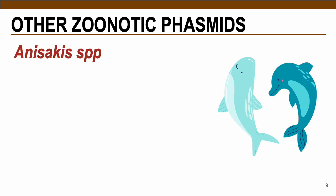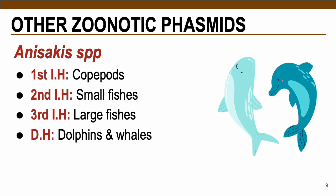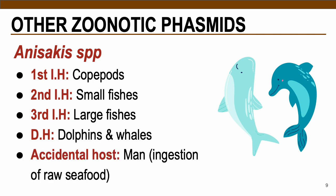In terms of the life cycle, Anisakis species requires multiple intermediate hosts. The first intermediate hosts are copepods — microscopic animals present in the water. The second hosts are small fishes, and the third are large fishes. For definitive hosts, dolphins and whales acquire the adult stage. Humans act as accidental hosts by ingestion of raw seafood from any of these three intermediate hosts.